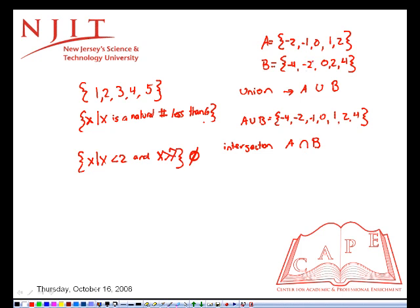So if we look at a and we look at b, we notice they both have a negative two, they both have a zero, and they both have a positive two. Therefore, the intersection of a and b equals negative two, zero, two.